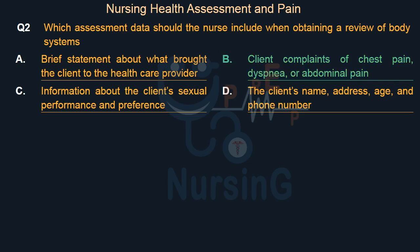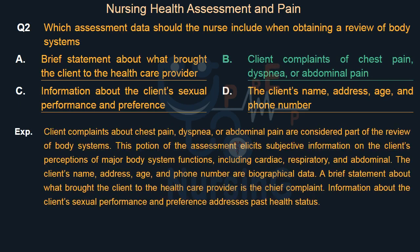The right answer is Option B: Client complaints of chest pain, dyspnea, or abdominal pain. These are considered part of the review of body systems, which elicits subjective information on the client's perceptions of major body system functions, including cardiac, respiratory, and abdominal. The client's name, address, age, and phone number are biographical data. A brief statement about what brought the client to the provider is the chief complaint. Information about sexual performance and preference addresses past health status.